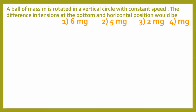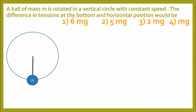In today's question, a ball of mass m is rotated in a vertical circle with constant speed — so the speed is constant everywhere on the circle. We need to find the difference in tensions at the bottom position and the horizontal position. The horizontal position can be either side, and both will give the same result.